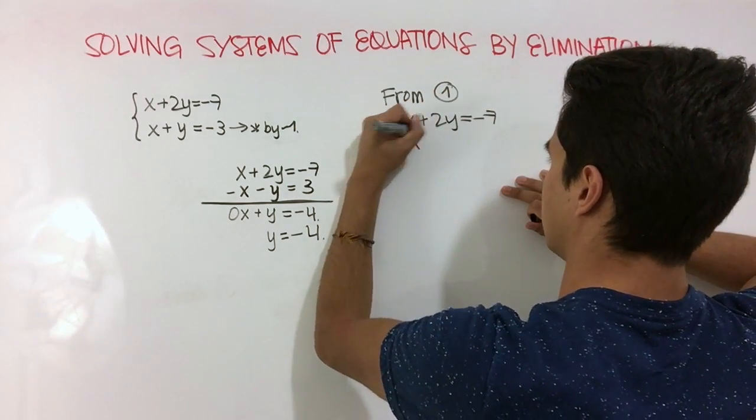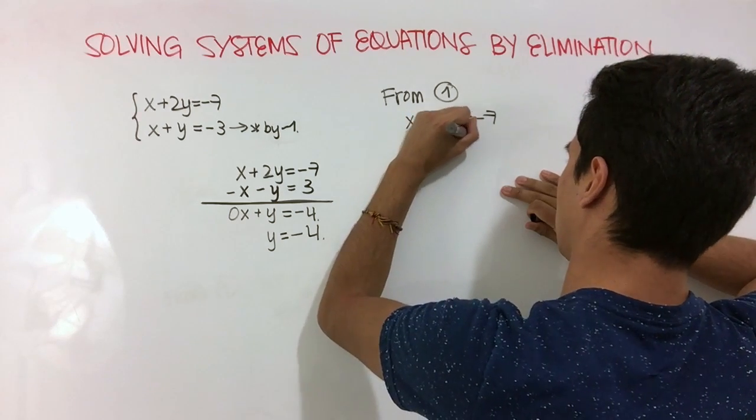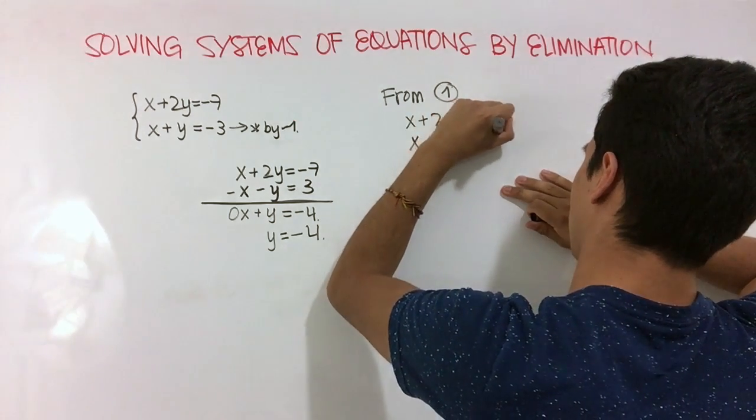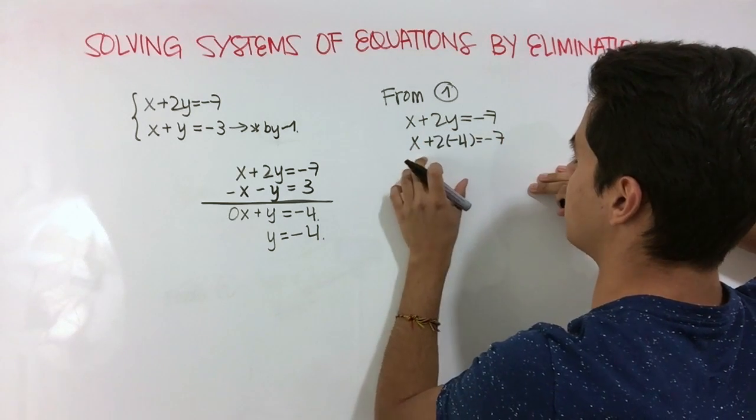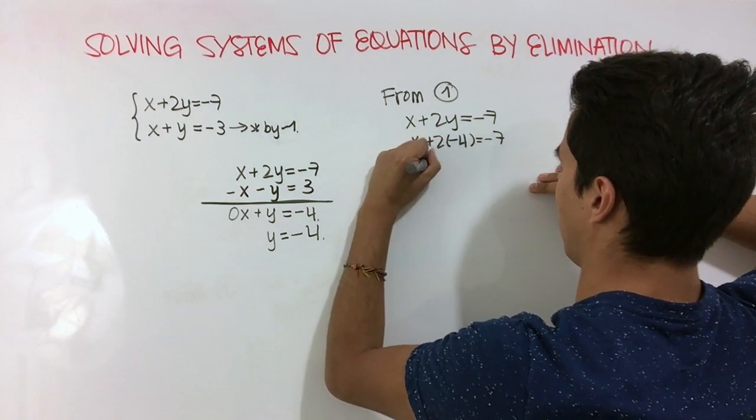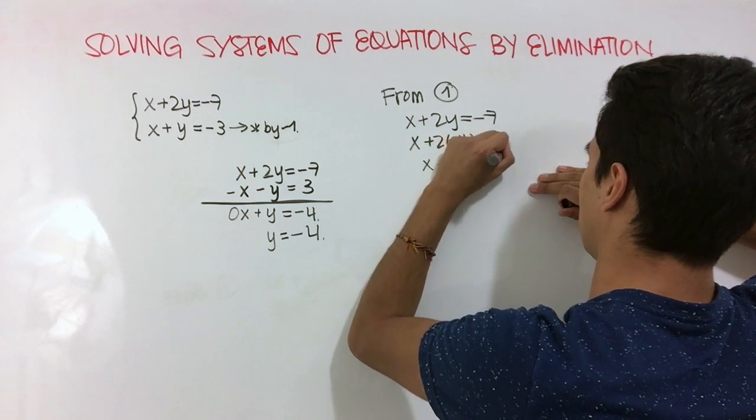So x plus 2 times negative 4 is equal to negative 7. That being said, we can just solve for x. So x minus 8 is equal to negative 7.